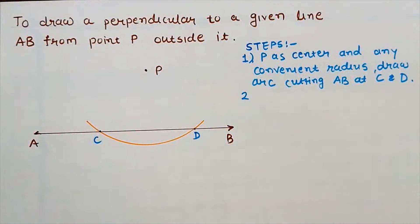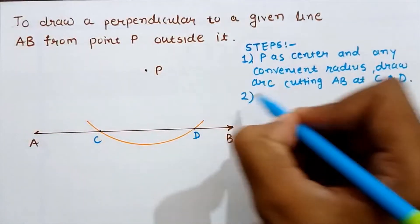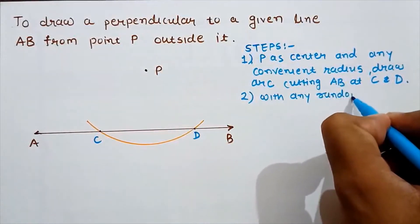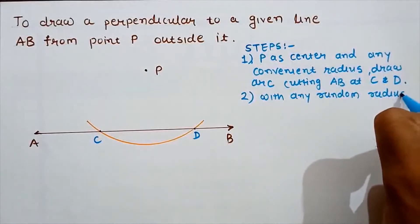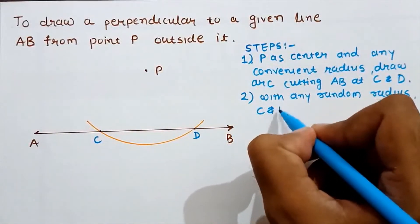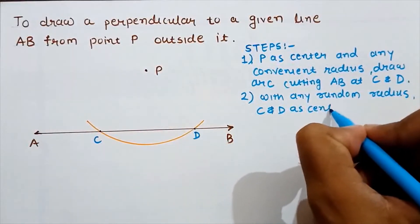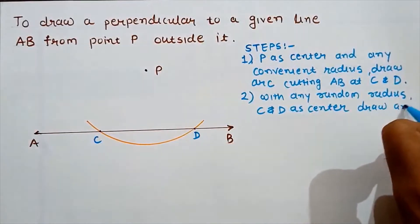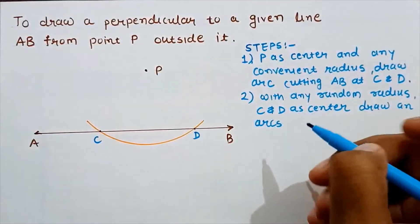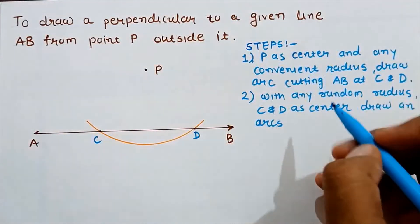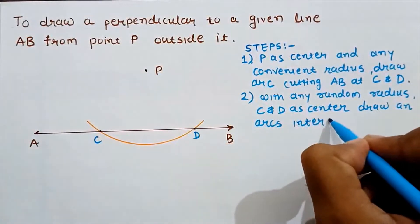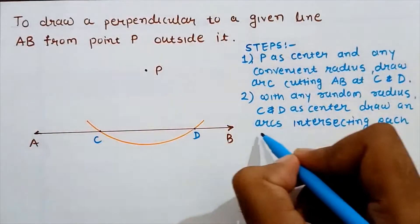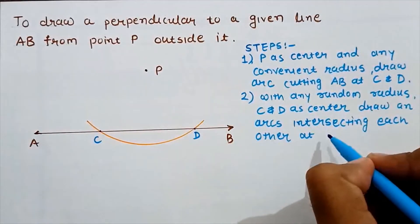Now in the second step, with any radius and C and D as centers, draw arcs intersecting each other at Q.